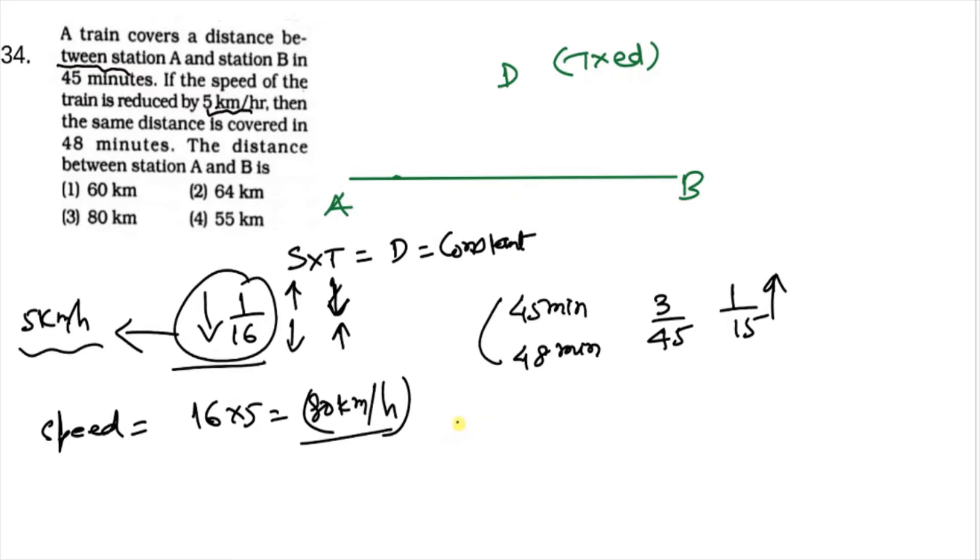45 minutes—distance kitna aayega? 80 km per hour into 45 divided by 60. Time in hours. 15 se 3, 4 se 20, so 60 km. The answer is option A.